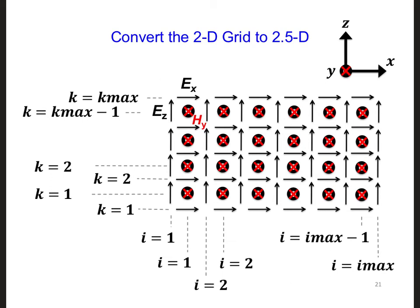One possibility is that we convert our two-dimensional model into a 2.5D model. We can do this by moving the source to the left, bottom edge of the grid, so say like right here, so it's just above the ground.